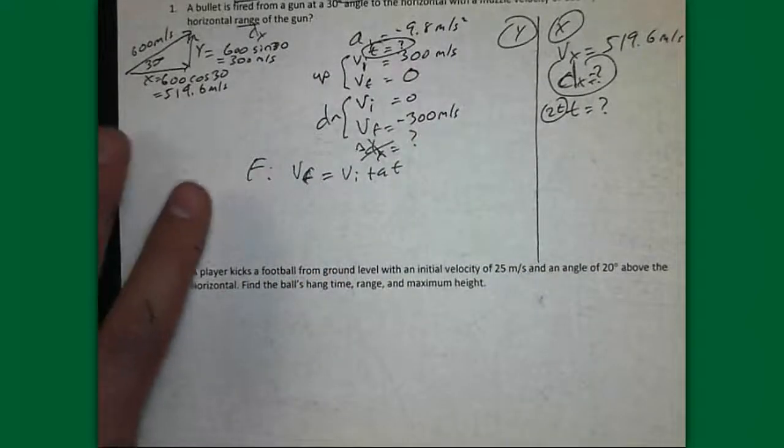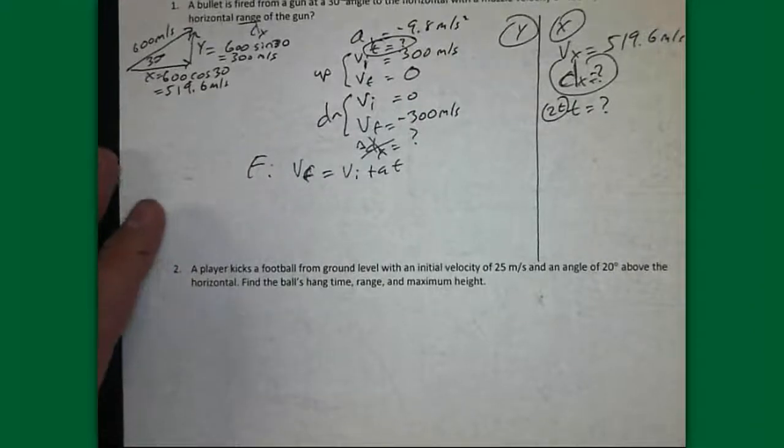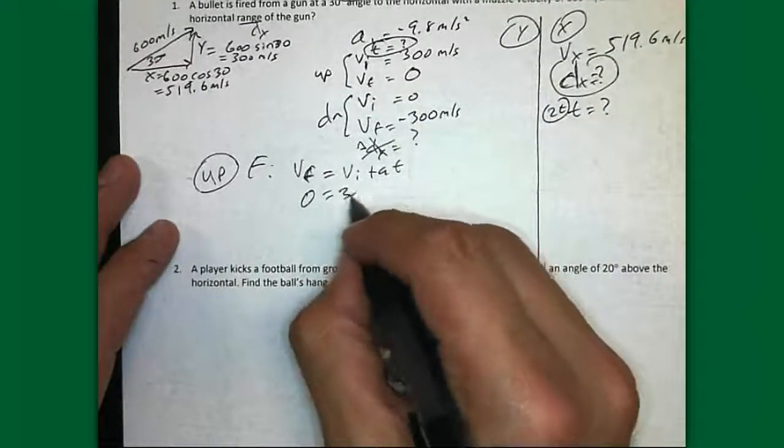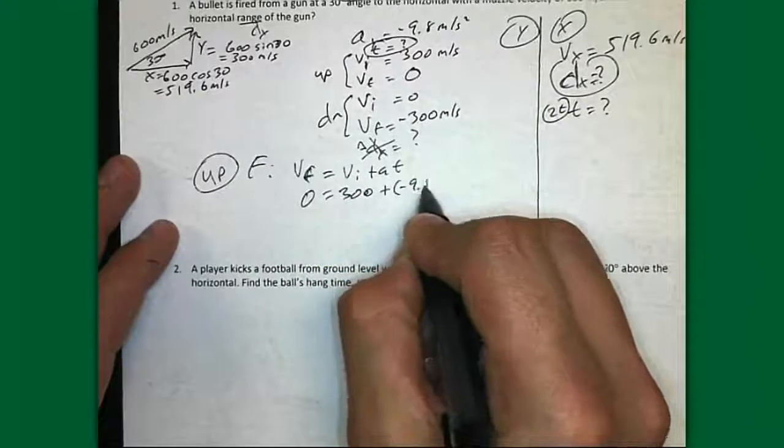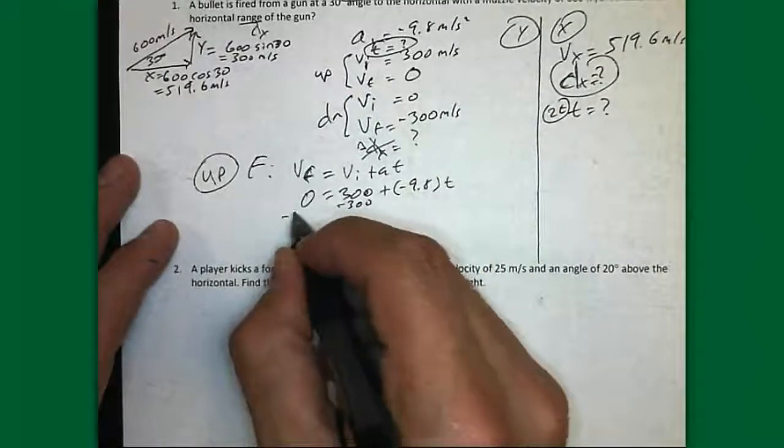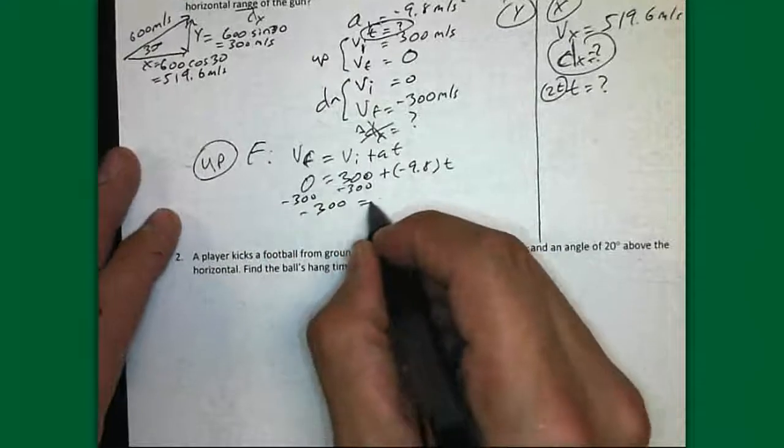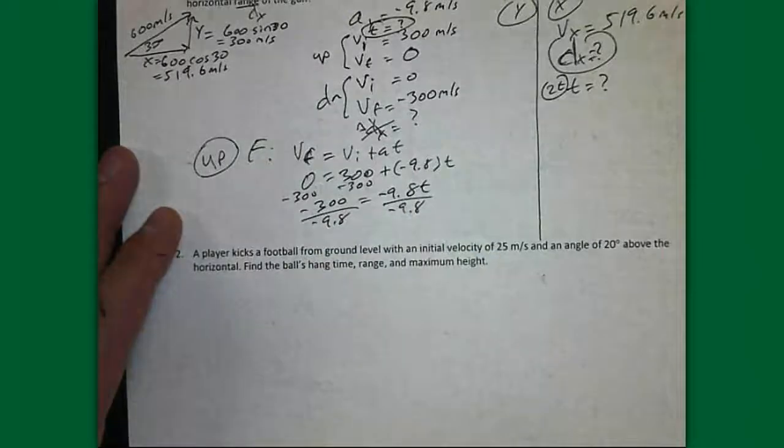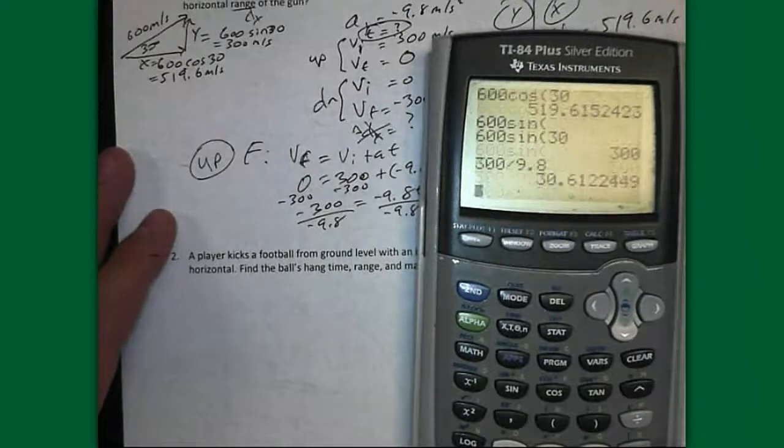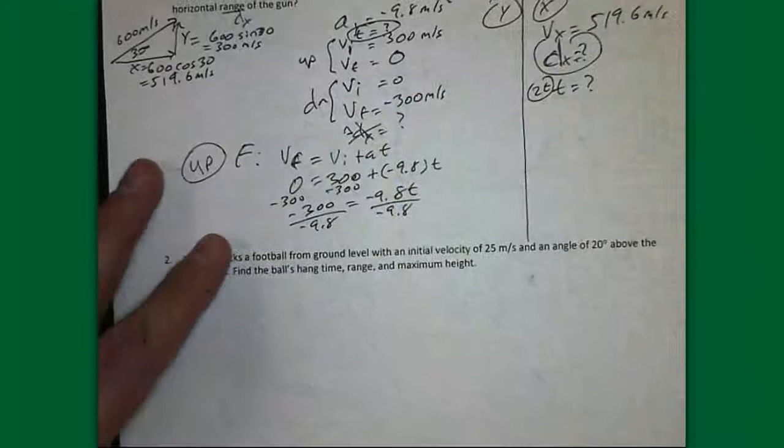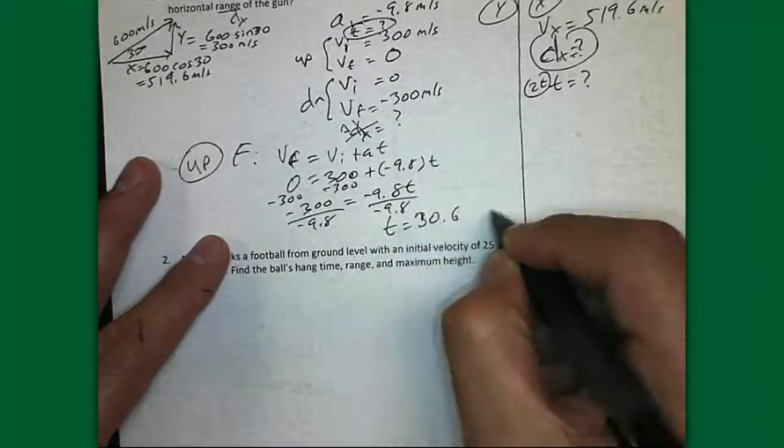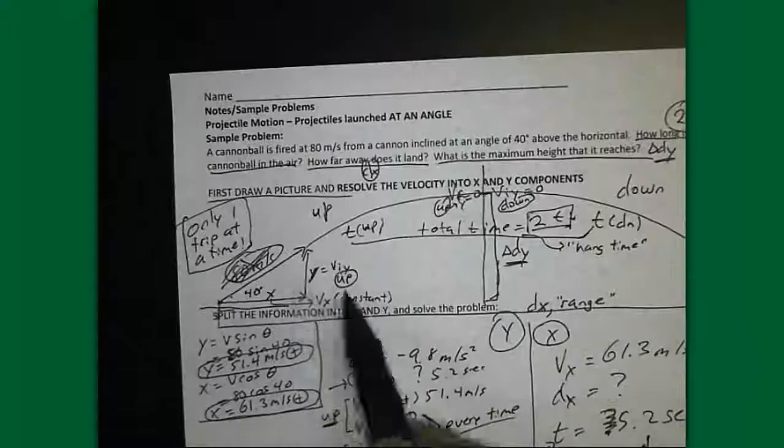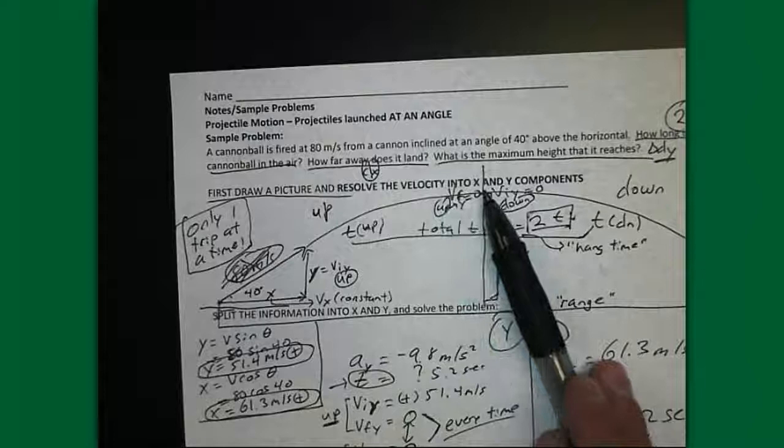VI plus AT. And remember we have to pick either the trip up or the trip down. We can only analyze one at a time. So let's pick the trip up. VF is 0. VI is 300. A negative 9.8 times T. Subtract 300 from both sides. And then negative 300 equals negative 9.8 T. Divide both sides by negative 9.8. And 300 divided by 9.8 gives me 30.6. So I know the time is 30.6 seconds, like half a minute. Half a minute to reach the maximum height. Half a minute for this thing. 30.6 seconds to go from here up to here. Because remember we only analyze the trip up.